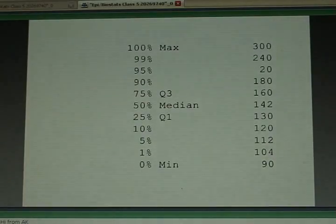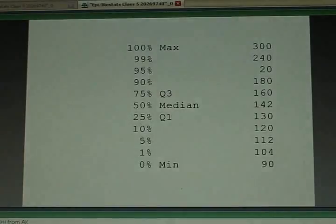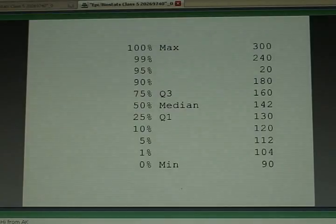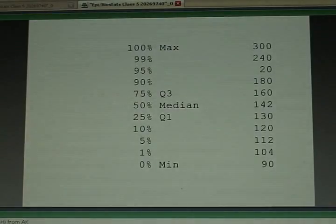The 75th percentile, called Q3, would be the person who 75% of the people are behind him or her in the line. They have blood pressures lower than him or her. 25% are above in the line. Their blood pressure is above his or her blood pressure. Well, that person had a blood pressure of 160. That's what I mean by the 75th percentile. The 25th percentile is 130.